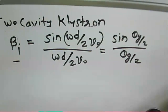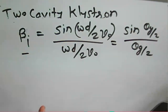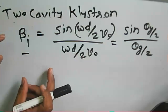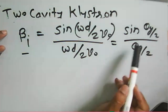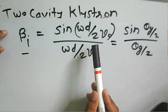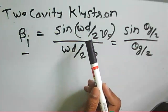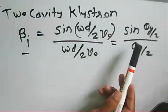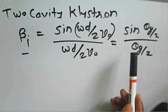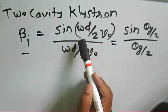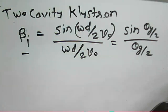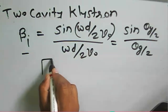Welcome to the micro engineering course. We'll continue with the two-cavity klystron discussion, including the mathematical equations. The beam coupling coefficient, beta_i, depends on the spacing between the cavities — specifically, the transit time angle, which describes the time taken by an electron to interact through the cavity.